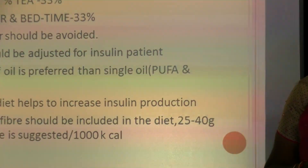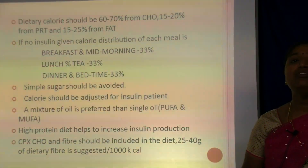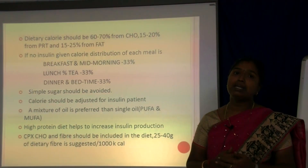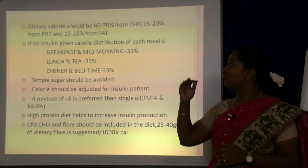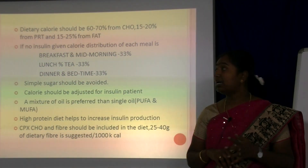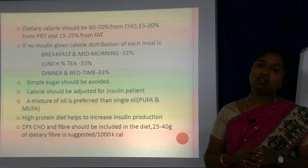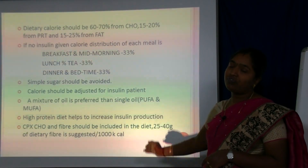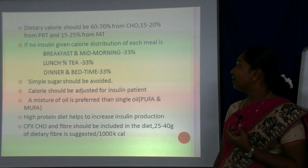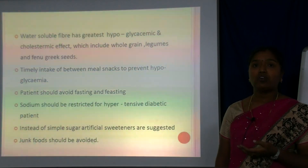The dietary calories should be 60–70% from carbohydrate, 15–25% from protein and 15–20% from fat. If no insulin is given, calories can be distributed as: breakfast and late morning 33%, lunch and tea 33%, and dinner and bedtime 33%. Simple sugar should be avoided. Calorie should be adjusted for patients on insulin. A mixture of unsaturated oils — polyunsaturated and other unsaturated fatty acids — is preferred over a single oil.